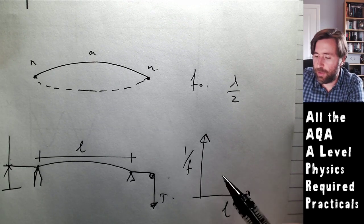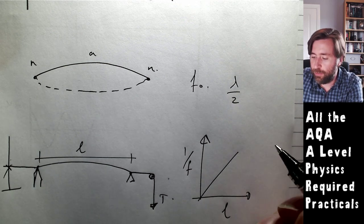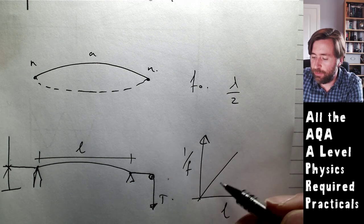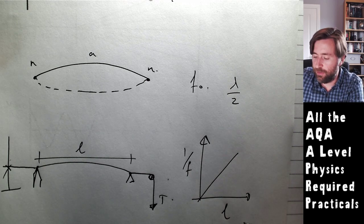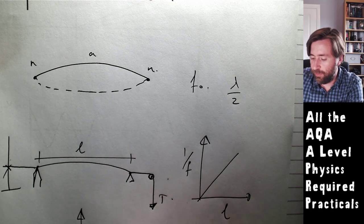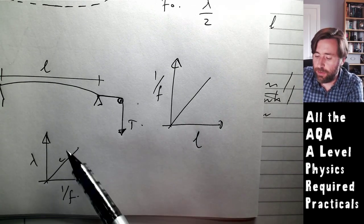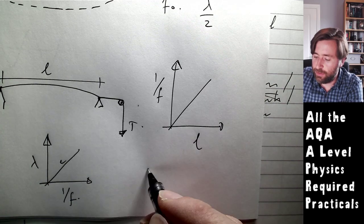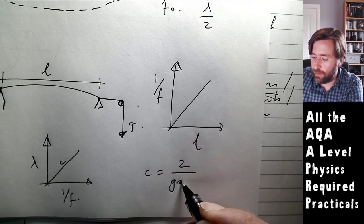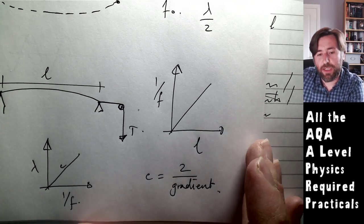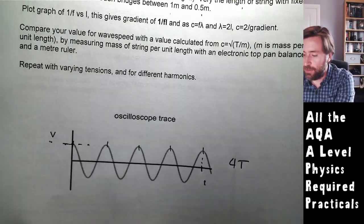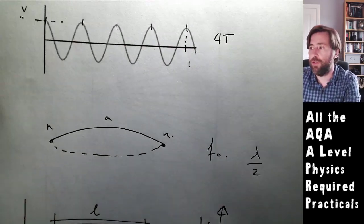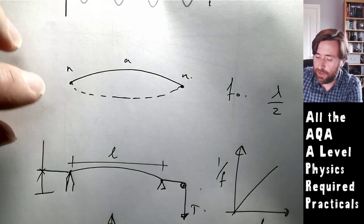Plotting one over f against length gives a straight line with gradient two over c. Rather than plotting wavelength versus one over frequency where speed would be the gradient, AQA do it this way around, so you use c equals two over the gradient to work out the wave speed. You can also vary the tension, or take readings at different harmonics - one full wavelength, two full wavelengths, and so on.